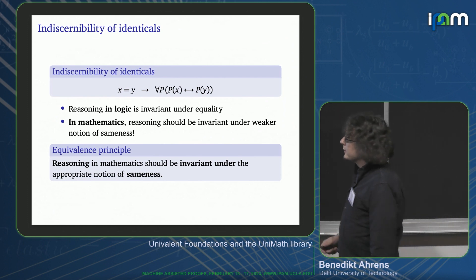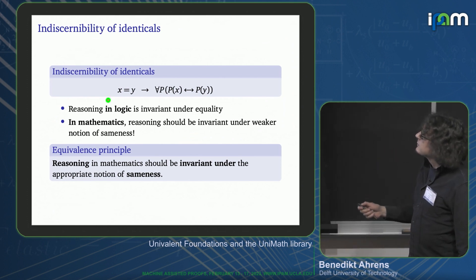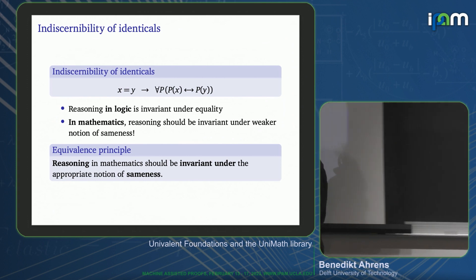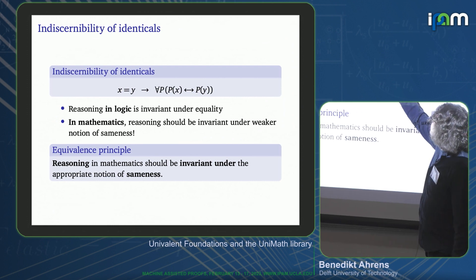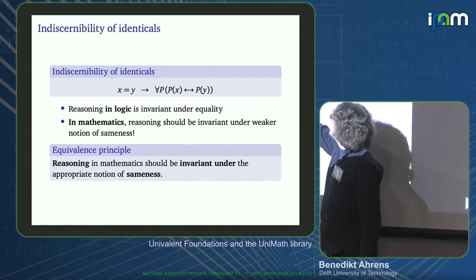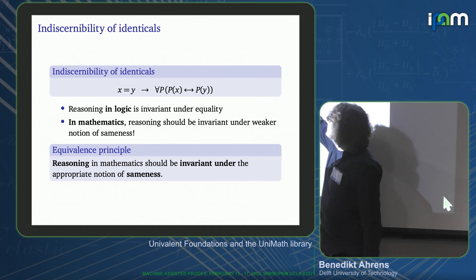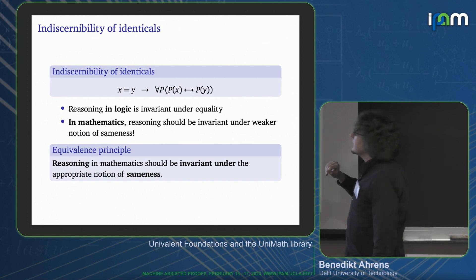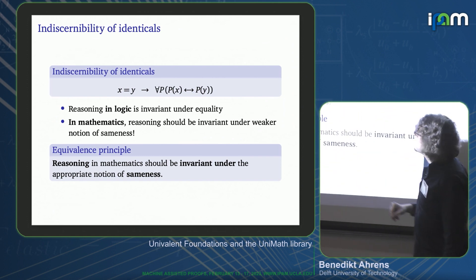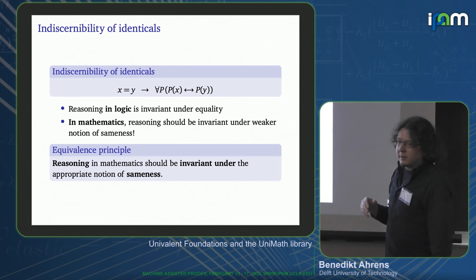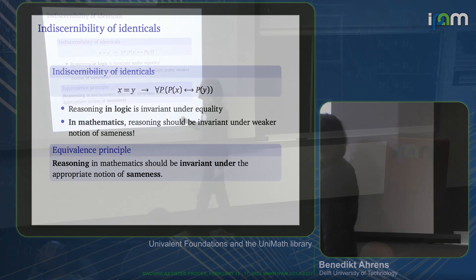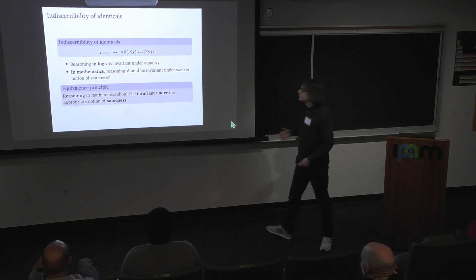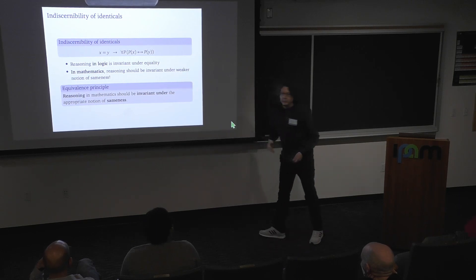Let's start philosophically with this principle: indiscernibility of identicals, which is a logical principle. It says that if two objects x and y are equal, then they satisfy all the same properties P. This is a purely logical principle that doesn't take into account the nature of x and y. It's also not a very useful property, because often we cannot prove that x is equal to y — we can only note that x and y are somehow similar but not necessarily equal. So in mathematics we want reasoning to be invariant under weaker notions of sameness.